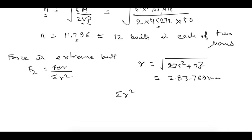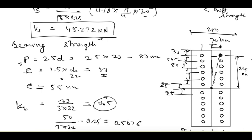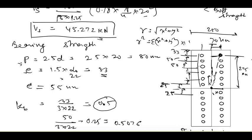The force due to moment is F₂ = P·e·r / Σr². To find Σr², we write Σr² = Σ(x² + y²). Since there is a repeating pattern, if we find the sum for 6 bolts we can multiply by 4 to get the total for all 24 bolts.